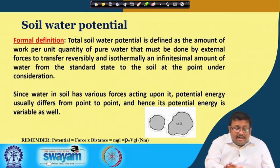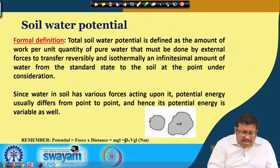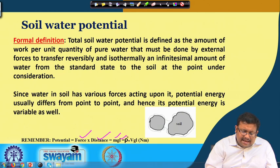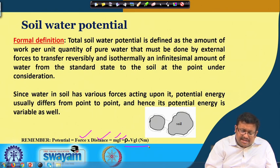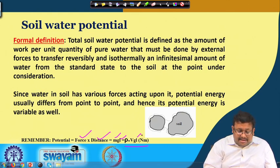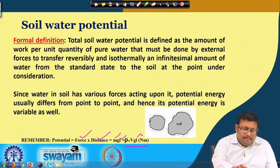Potential is defined as a multiplication of force and distance. The force is denoted by mg and the distance by L. The expression is rho_w × v × g × L, where rho_w is the density of water, v is volume, g is gravitational acceleration, and L is the distance. It is expressed in Newton per meter, which is the general expression of potential.